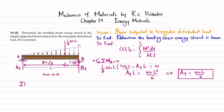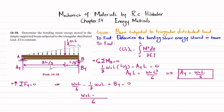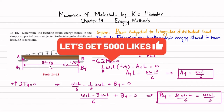Now we find B_y using the sum of all forces in the y-direction equals zero, with upward forces positive. So (w₀L/6) - (1/2)w₀L + B_y = 0. Taking the LCM of 6, this gives w₀L - 3w₀L + 6B_y = 0, so B_y = 2w₀L/6, which simplifies to B_y = w₀L/3.